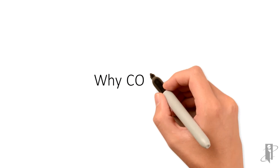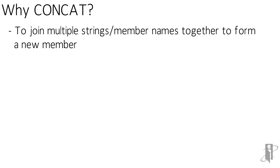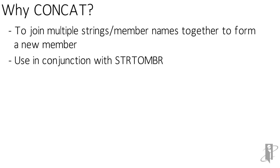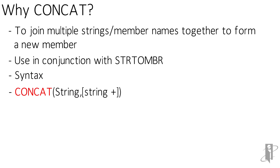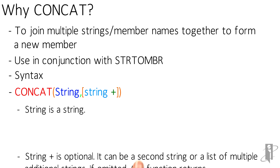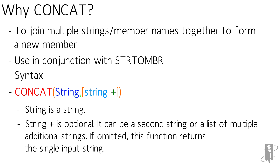So why concat? We use it to join strings or member names together to form a new member. Many times it's used in conjunction with the string-to-member function. The syntax is: concat, open paren, the first string, comma, and optionally the second string or more strings. The first item is a string or a member name that returns a string. The additional string parameter is optional — it can be a second string or a list of multiple additional strings. If it's omitted, the function returns just the single string.